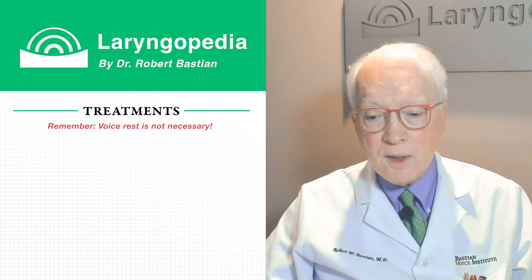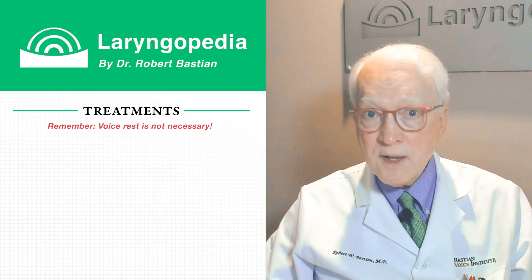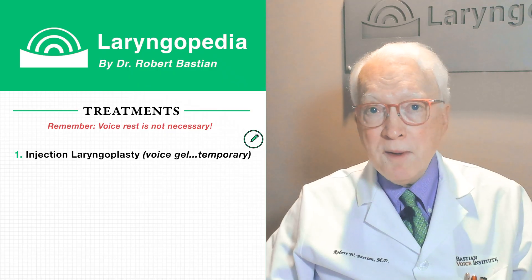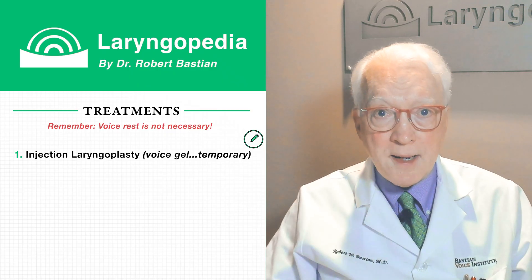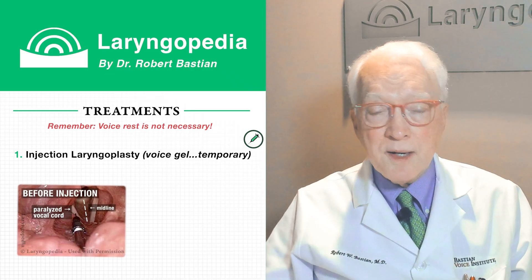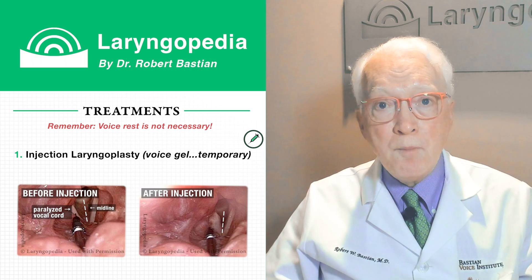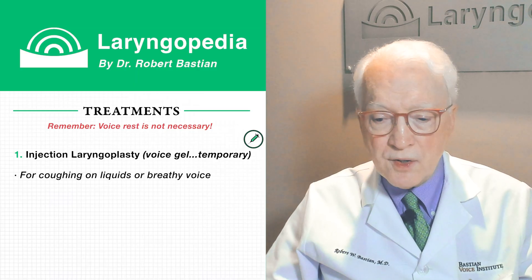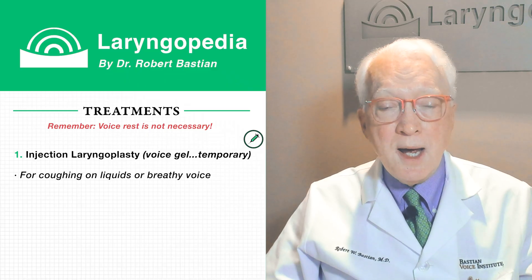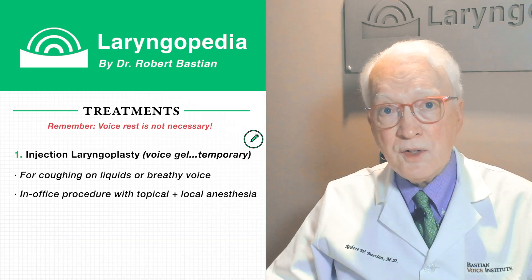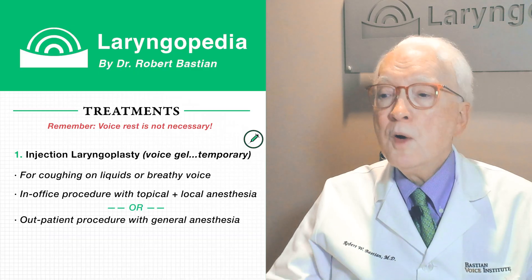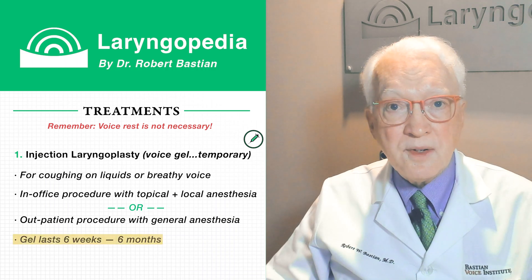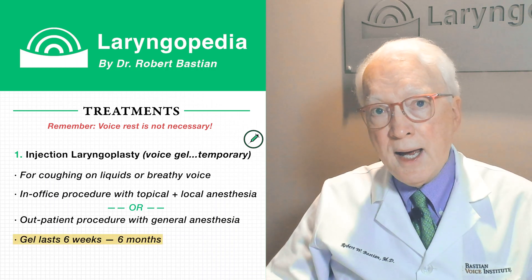Can we do something to help while waiting for recovery? Yes. There is a temporary plumping material we can inject into the vocal cord — similar to how people have their lips injected for cosmetic reasons, but it's the vocal cord that we're injecting. It can be collagen or, more commonly, a voice gel material. That's for people who are struggling with coughing on liquids or whose voice is so breathy they can't do their work. The procedure can be done in-office with topical and local anesthesia, or under brief general anesthesia in an outpatient OR. The improvement with gel can last six weeks to six months, more often on the shorter side, and can be repeated as needed.